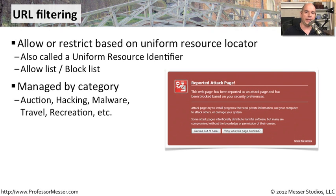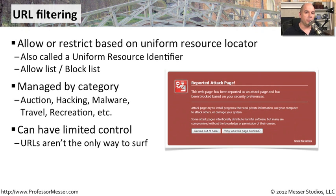Normally, the content filtering engine used for this will categorize URLs — millions and millions of URLs — into very common categories like auction sites, hacking sites, malware sites, travel sites, and recreation. There will be millions of sites within each particular category, and the administrator can say you may visit an auction site but not a hacking site. Since those sites are already listed inside of those categories, it's a very easy way to filter. This is a good way to control what people are seeing in their browser, but it's just one way of controlling the content going in and out of your organization.